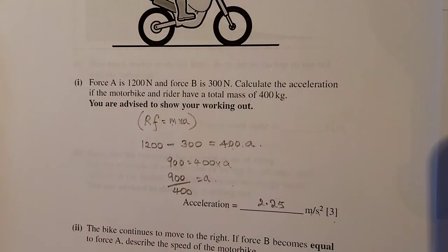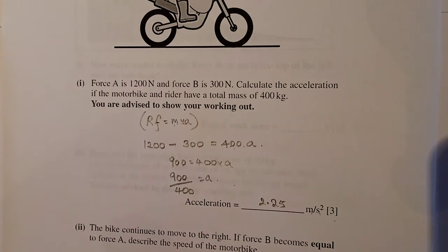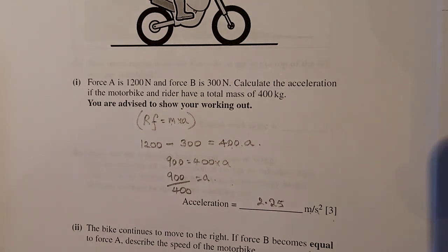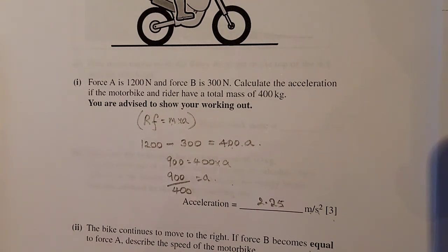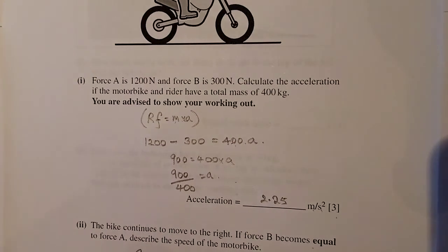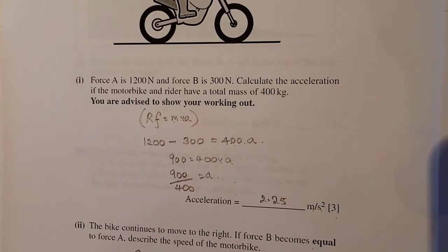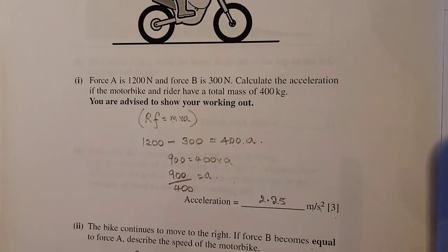The bike continues to move to the right if the force B, that's the force from the drag, becomes equal to force A. Describe the speed. So remember Newton's first law. The body remains at rest or the state of uniform motion, unless acted on by external force. So these are balanced forces. So it becomes equal to balanced forces. Constant speed. Again, speed becomes constant speed. That's the dog in the background. State a way in which the force B would become larger than the 300 newtons. Put the brakes on. Put brakes on. Friction increases. It goes through water. It goes through a puddle. It goes through dirt.